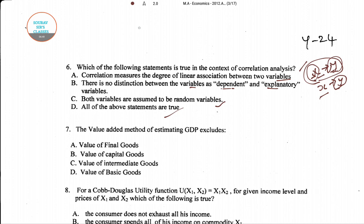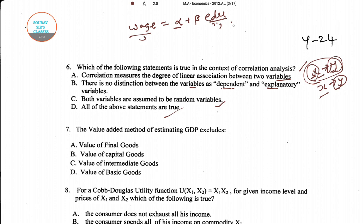To understand correlation, consider an example: your wage depends on education — wage equals alpha plus beta times education. Both are random variables since your education can change and your wage can also change simultaneously. This is why we say they are varying in nature and are random variables.